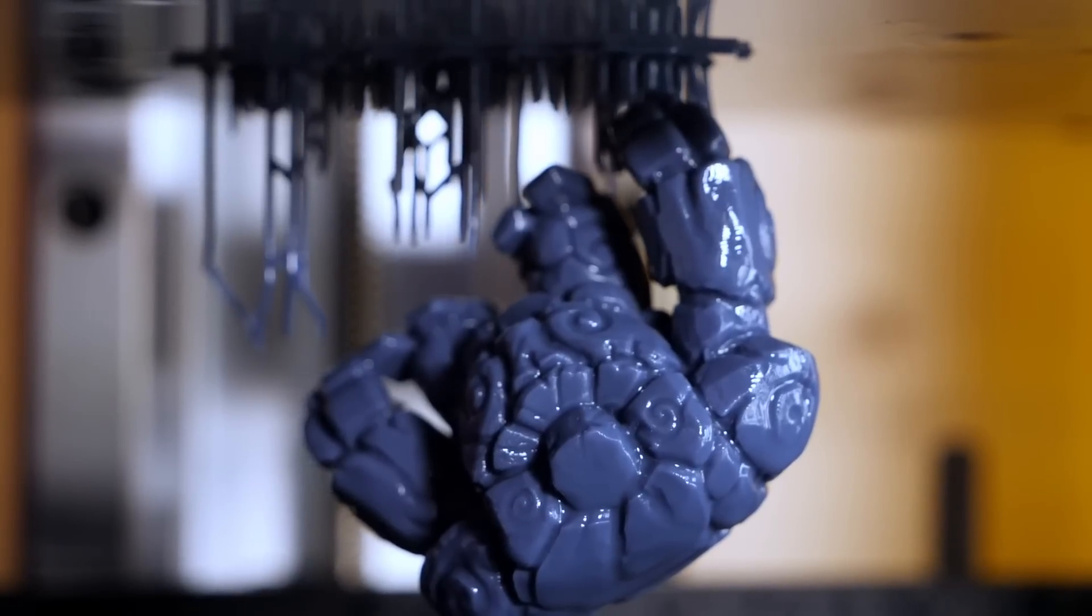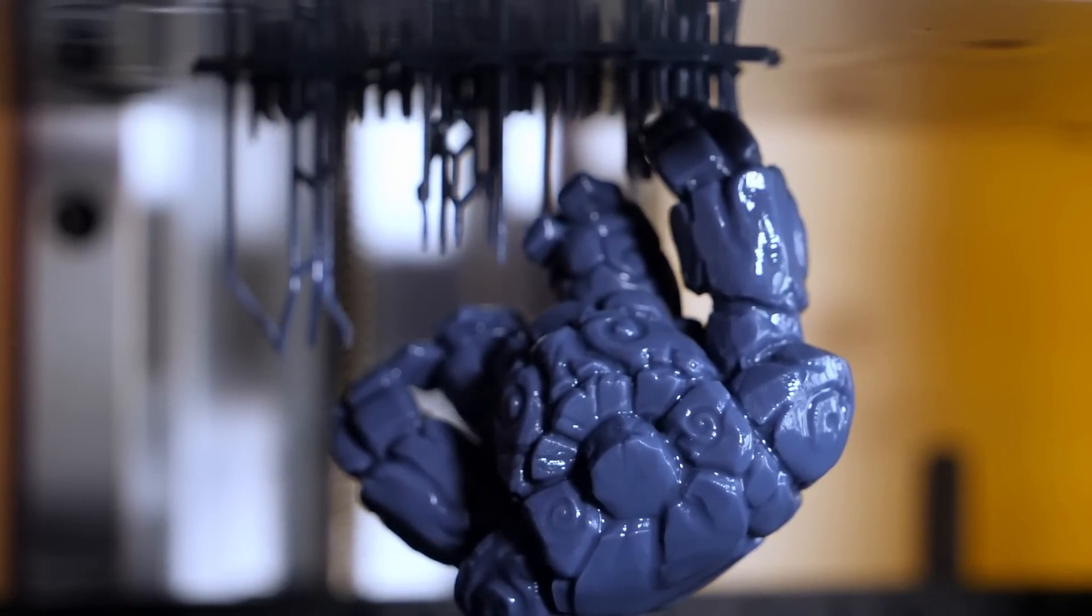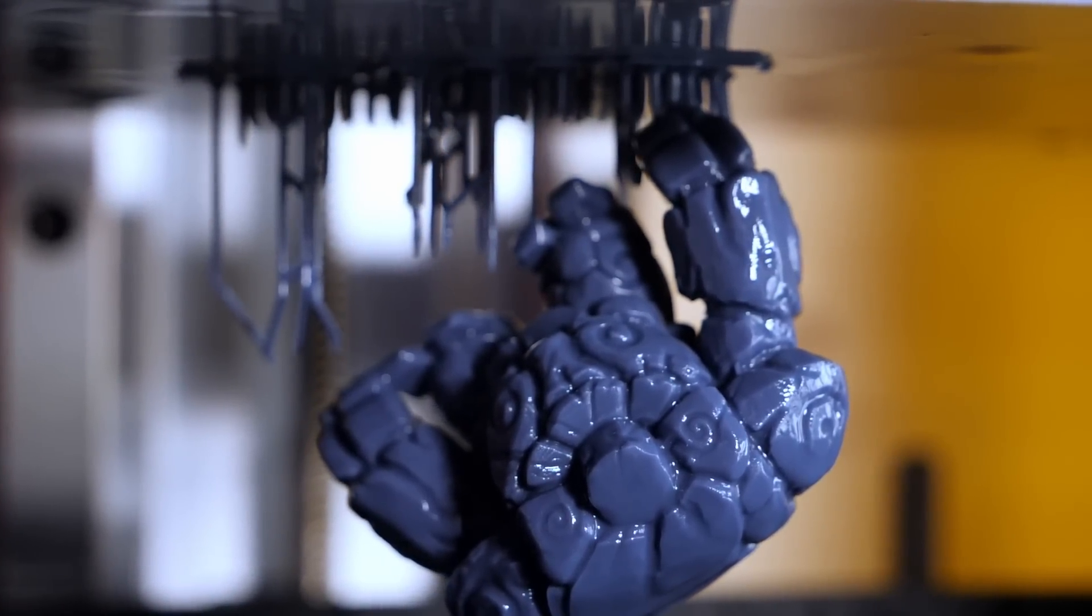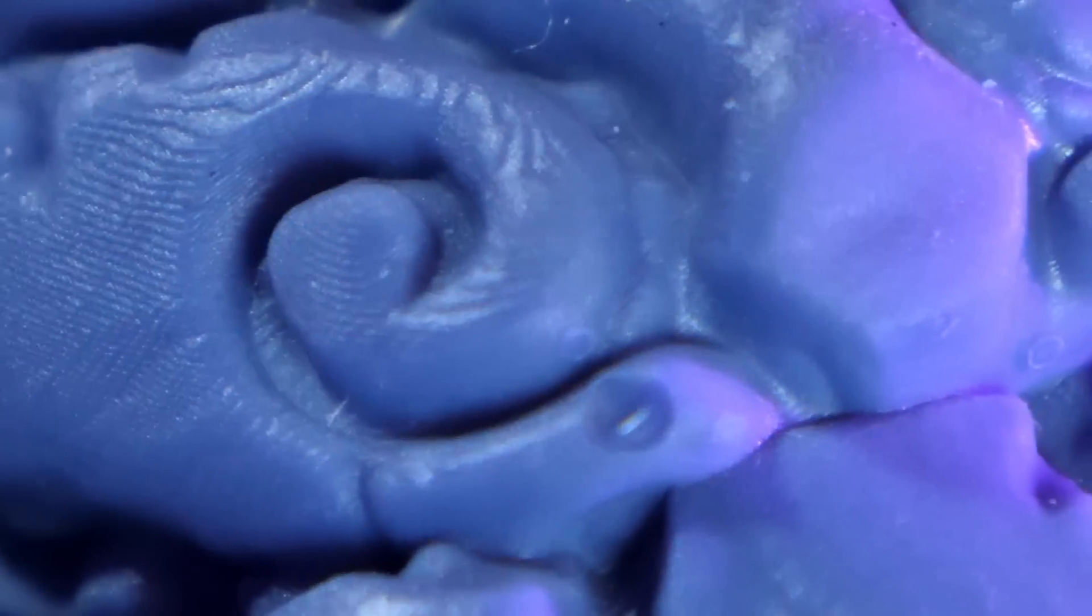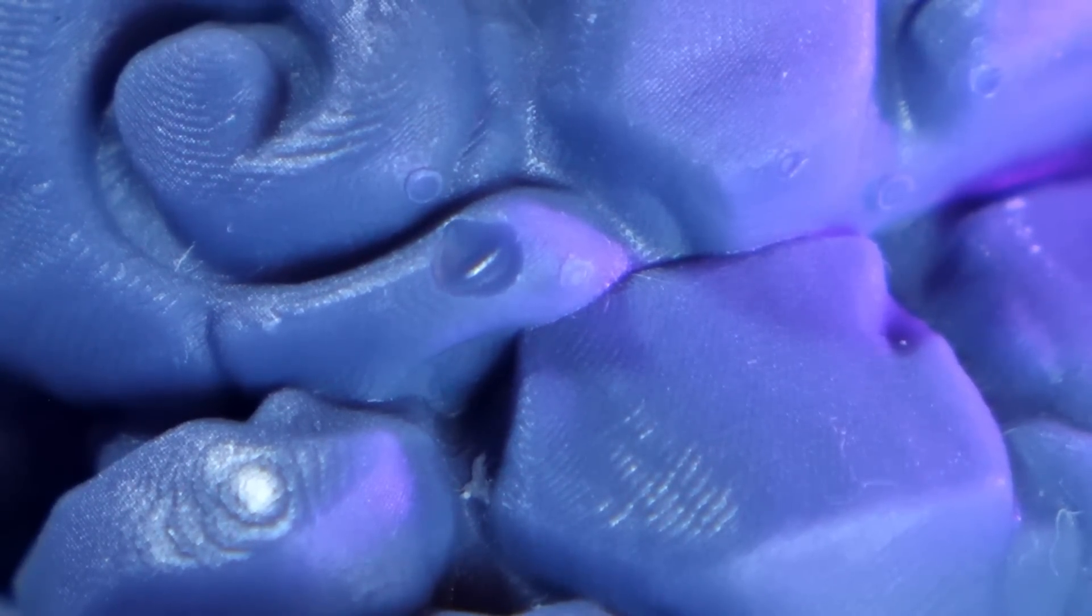Underexpose the resin during the print and you will most likely have support failures and limited detail on your print. Overexpose the resin and your support cleanup will be more tedious with the possibility of damage during the removal process. Plus, your fine details will most likely be lost due to overexpansion of the cured resin, not to mention more stress on the FEP sheet. So, getting this step right is crucial.